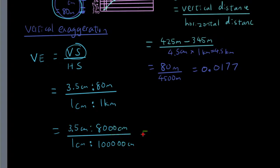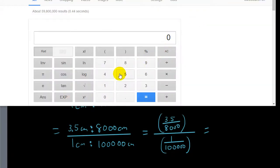So now that they're all in centimeters, I can rewrite them as fractions. So it's 3.5 divided by 8,000, that's basically how you convert a ratio to a fraction. And then you divide it by 1 over 100,000. So now just put this big equation into the calculator. So let's put in bracket 3.5 divided by 8,000 divided by bracket 1 divided by 100,000. So now put all this in: 43.75.